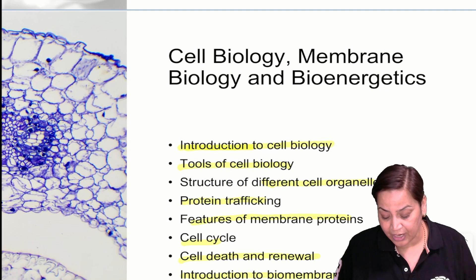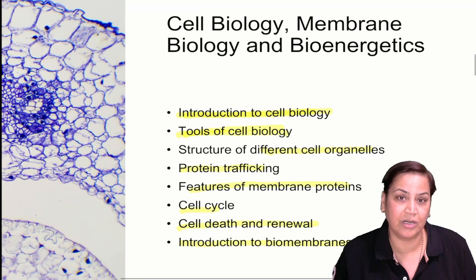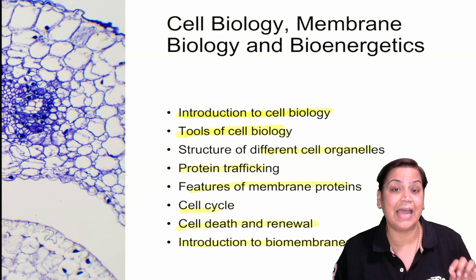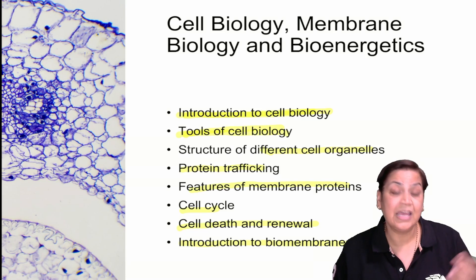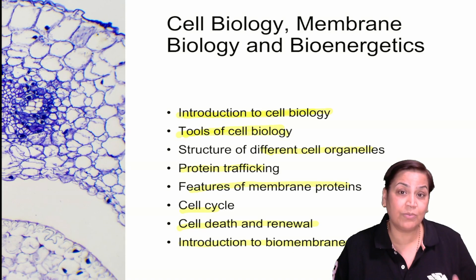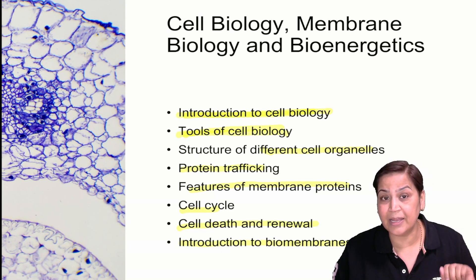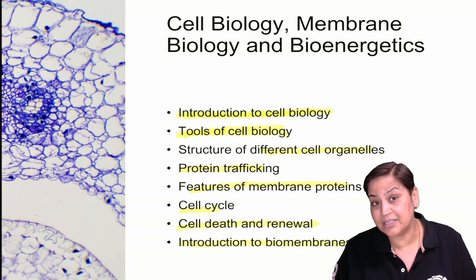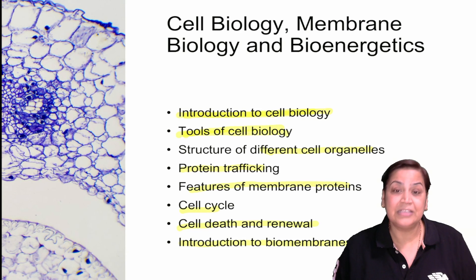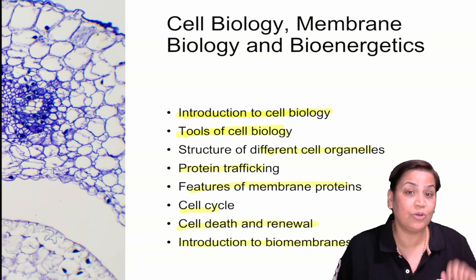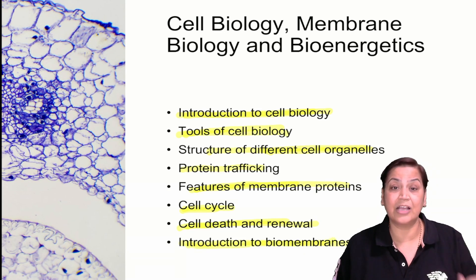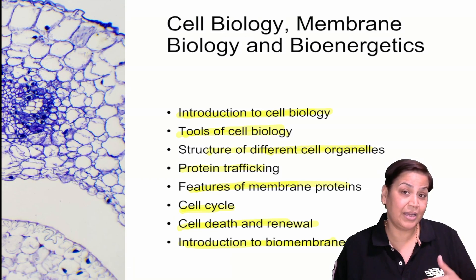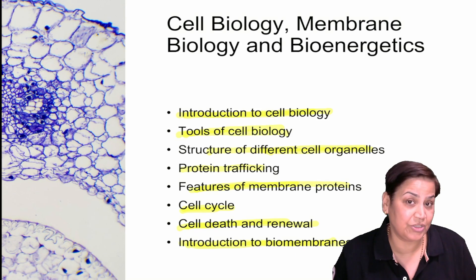Then cell biology membrane - introduction to cell biology and tools of cell biology. These are important topics because the cell is the structural and functional unit of life, and when studying processes you should differentiate in which organelle they occur. For example, mitochondria are the powerhouses of the cell because ATP synthesis occurs there and most oxidation occurs there. Similarly, cytoplasm, smooth endoplasmic reticulum and rough endoplasmic reticulum are there. Topics include structures, features, the cell cycle, cell death and renewal, and introduction to biomembranes and transport.